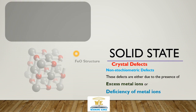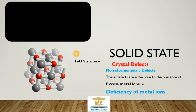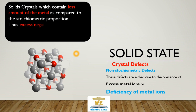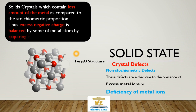Another type of defect is deficiency of metal. In this case, a few metal atoms are lost, creating a deficiency of metal. But the charge will still be neutral — the lost positive charge must be compensated by existing metal atoms. Solid crystals which contain less metal atoms compared to the stoichiometric proportions required have this excess negative charge balanced by some metal atoms acquiring excessive positive charge.